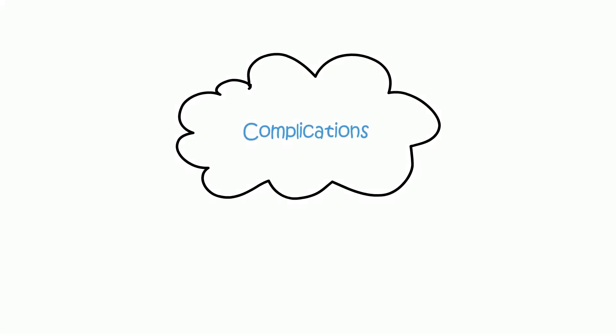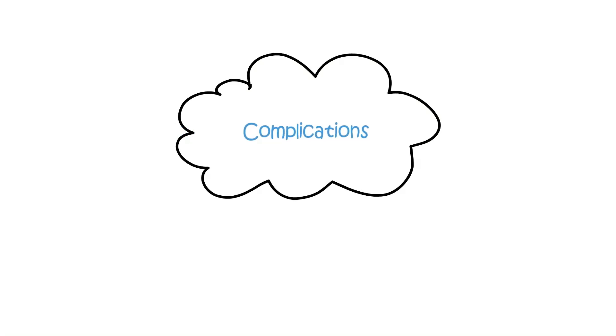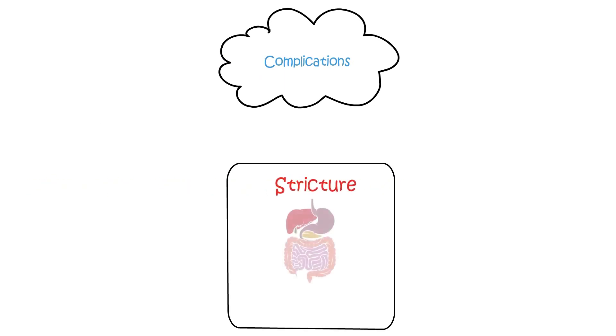Complications. Here are some potential complications of Crohn's. Stricture, where a part of the gastrointestinal tract becomes narrow due to scar tissue forming as a result of the inflammation.